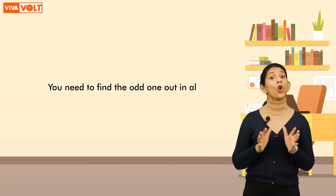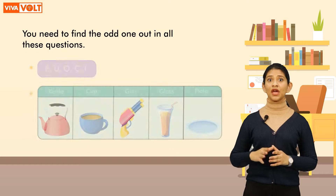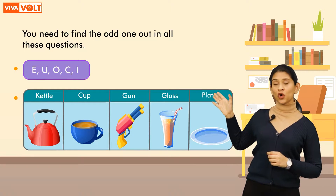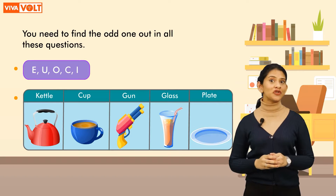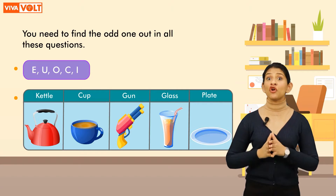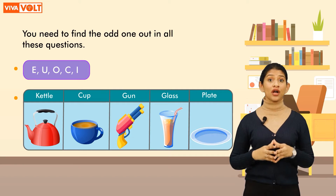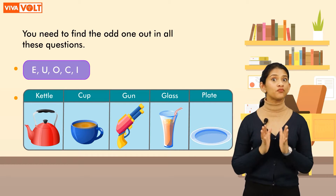You need to find the odd one out in all these questions. Here are the questions for you to solve. That's all for now — I hope you understood the concept of analogy and classification properly. I will see you soon with a new concept!